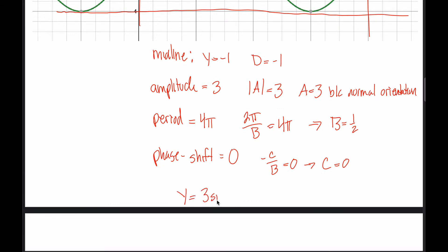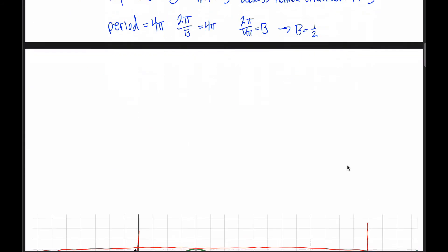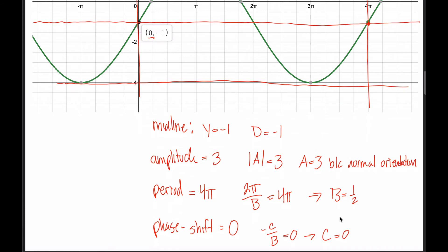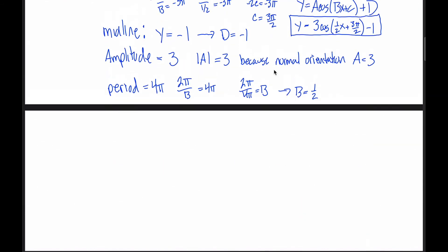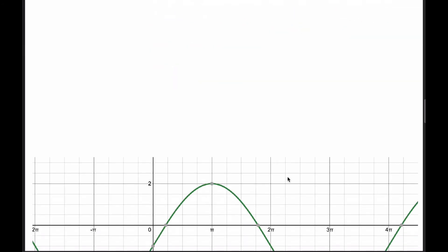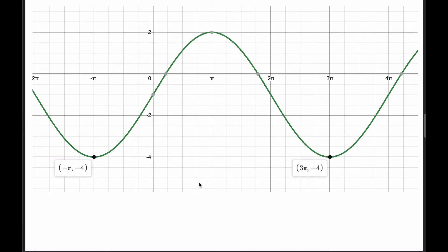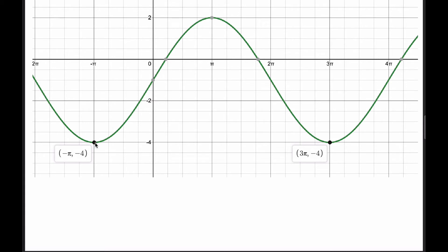So my final answer is y = 3·sin((1/2)x + 0) − 1, which most people would write as y = 3·sin((1/2)x) − 1. It's worth pointing out that this is a very different-looking equation from what I got in the previous example. But if you go to Desmos and type in either equation, you'll see it's the exact same graph. And those aren't the only two equations that produce that exact same graph.